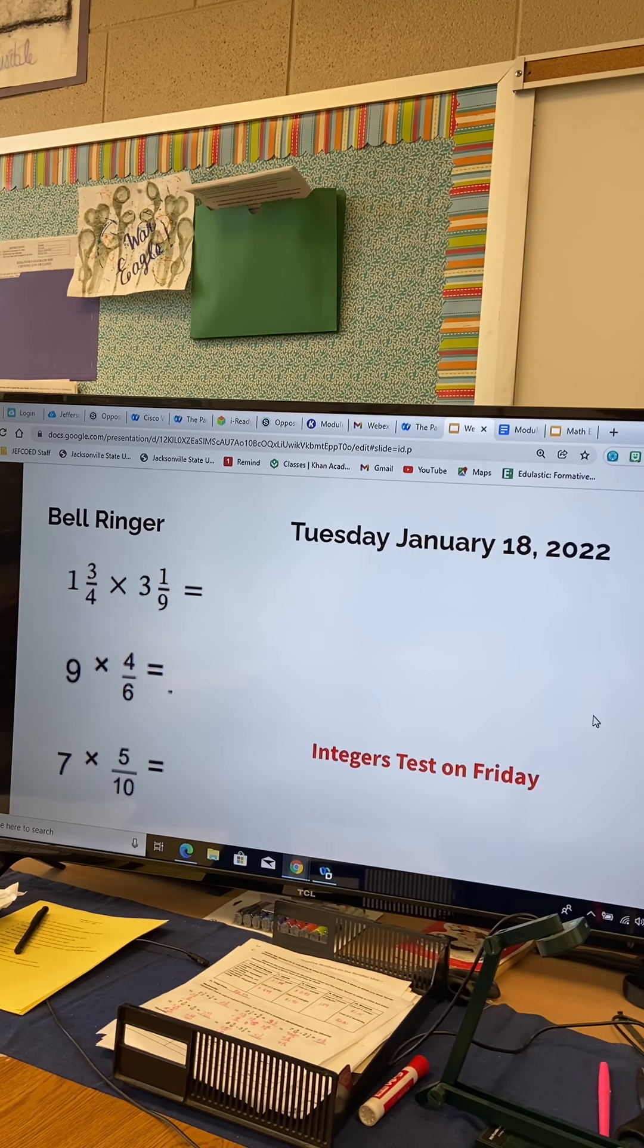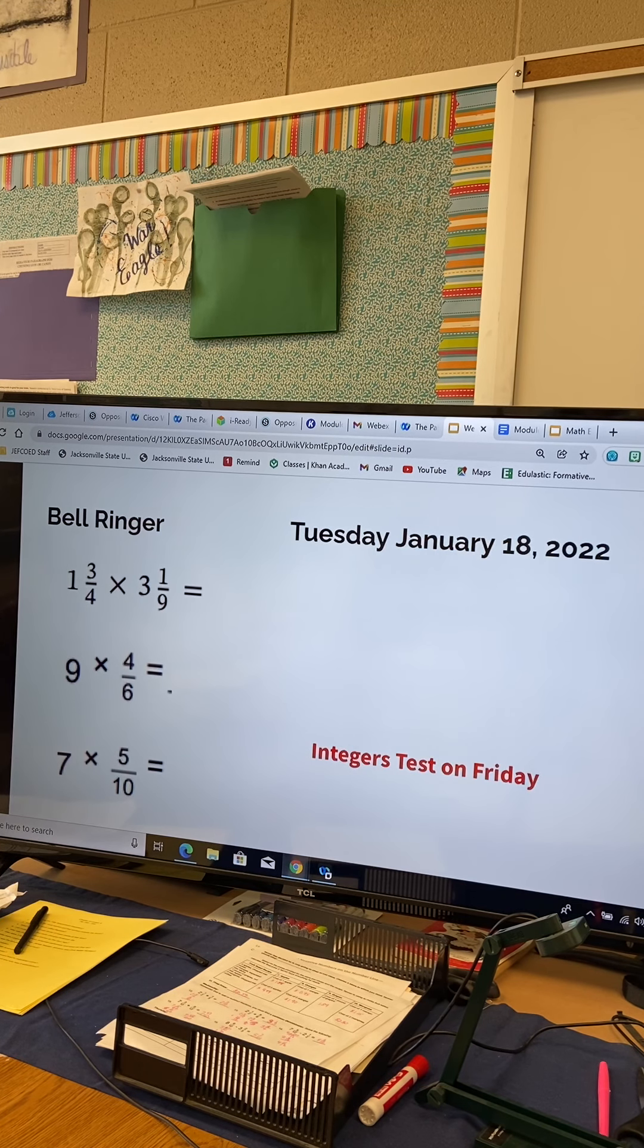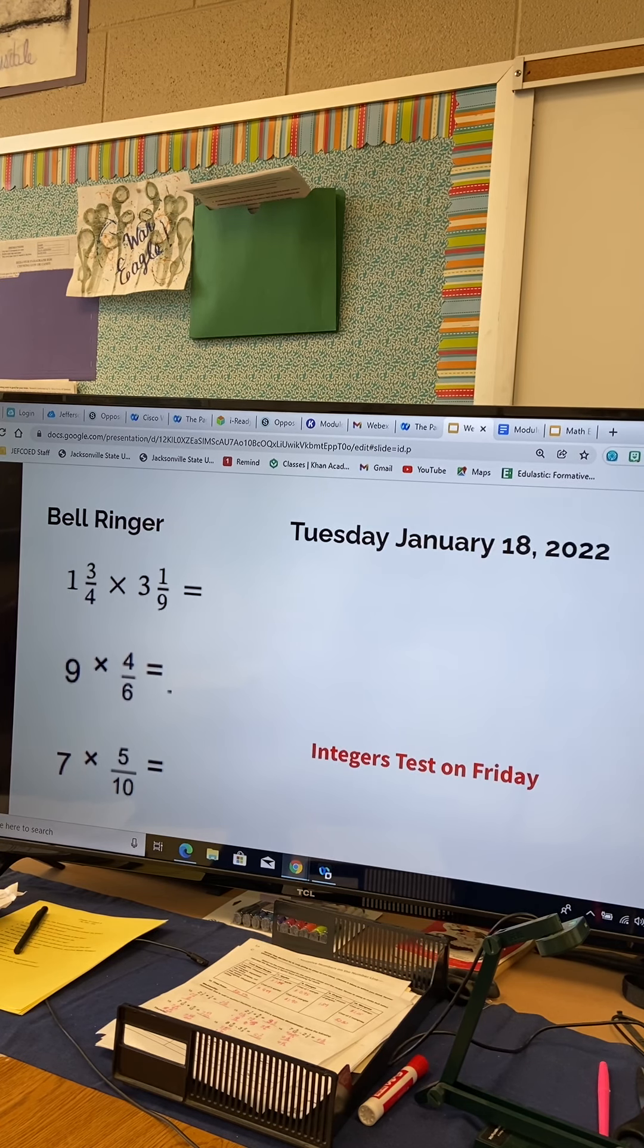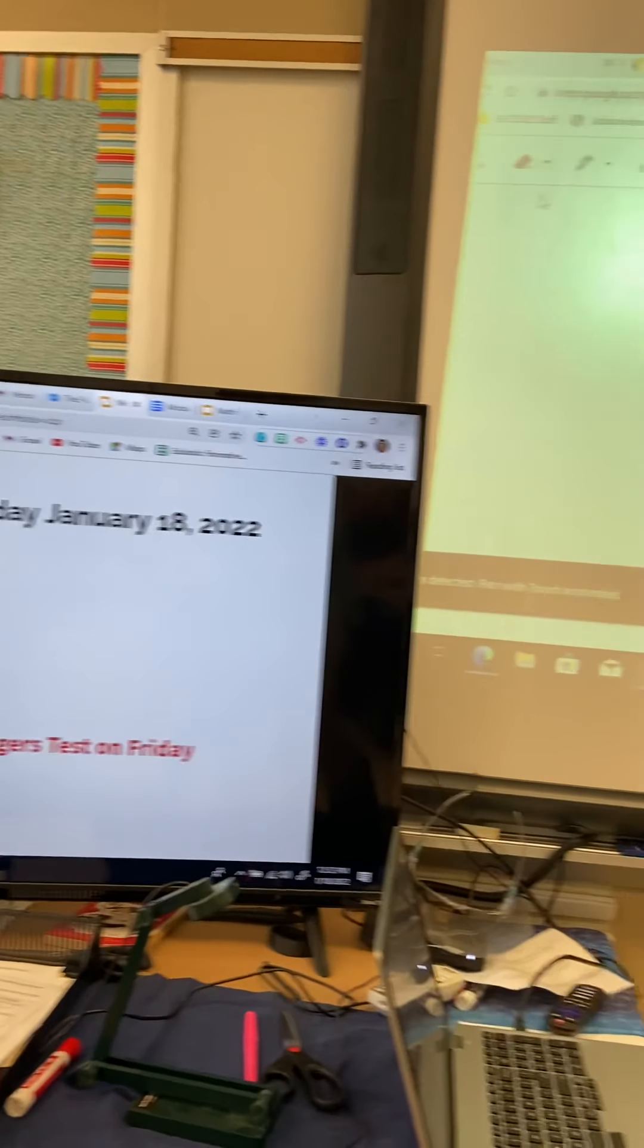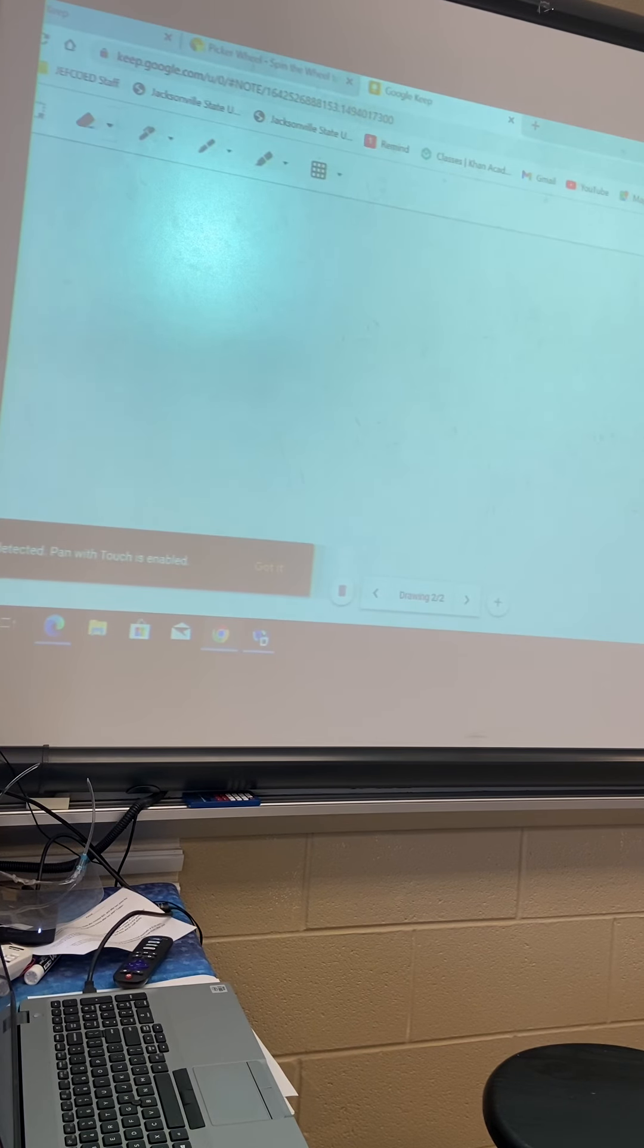Okay, so bell ringer, we have 1 3/4 times 3 1/9. So what do we have to do to that before you can multiply those fractions? Make them improper. Okay, so here we go. All right, so we have 1 3/4 times 3 1/9.